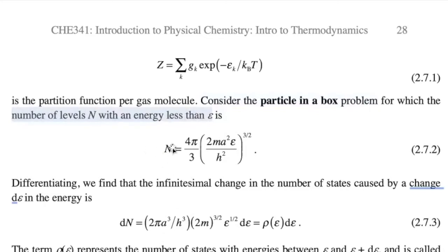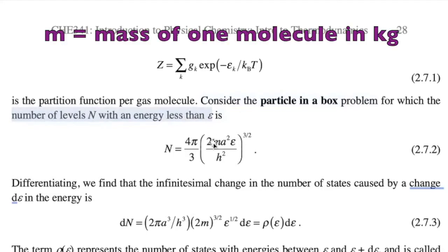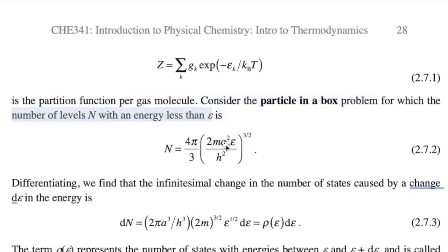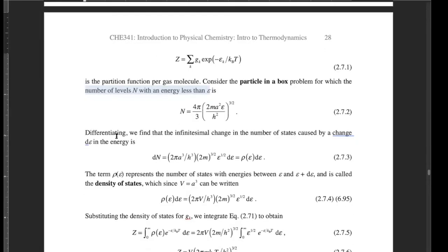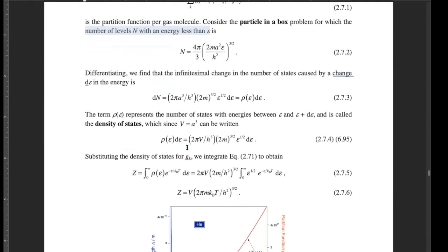We can determine the number of levels with an energy less than this energy epsilon. The number of levels with an energy less than energy epsilon is related to a bunch of constants: Planck constant, the mass of the molecule, and the size of the box A squared. A is the length of the box. Let's differentiate this with respect to energy. What we can define then is this density of states. The density of states is how many states there are per unit energy.